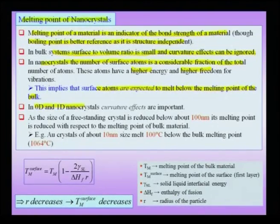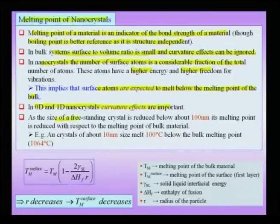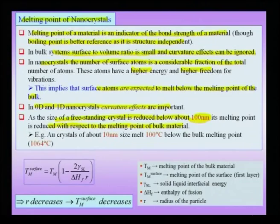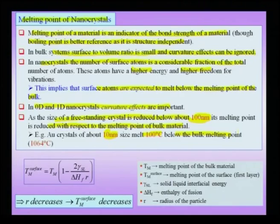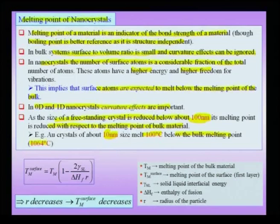We have already noted that in 0D and 1D nano crystals curvature effects are important and cannot be ignored. As the size of a free-standing nano crystal is reduced below about 100 nanometers — and I am talking about single crystals which are free standing — it is noticed that its melting point is reduced with respect to the bulk melting point. In fact, experiments have shown that gold crystals about 10 nanometers in size melt about 100 degrees below the melting point of the bulk. The bulk melting point of gold happens to be 1064 degrees Celsius.